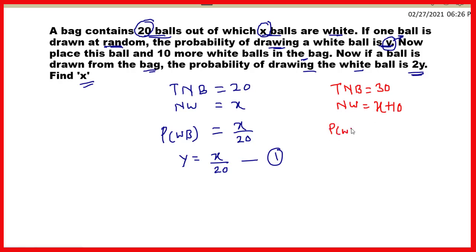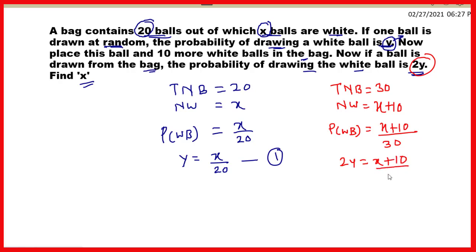Therefore, the new probability of getting a white ball will be equal to favorable outcome divided by total outcome, so it will be x plus 10 upon 30. Lekin yeh nayi probability 2y di hai, so 2y is equal to x plus 10 upon 30. Taking 2 to the other side, y is equal to x plus 10 upon 60. Let this be equation number 2.